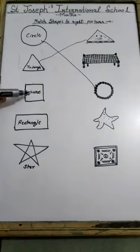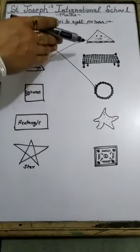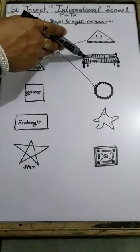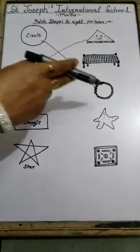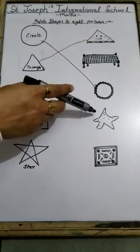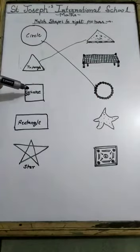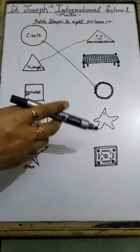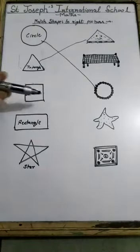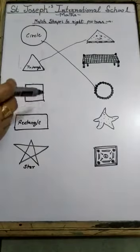Next, this is square. Now tell me, which figure or picture has square shape? Match. This is cot — cot has square shape? No. Bangle has already matched, so leave it. See this — starfish. This is starfish. Starfish has square shape? No. And this is carom. Match carom to the square shape? Yes, carom has square shape. So match square shape to the carom.